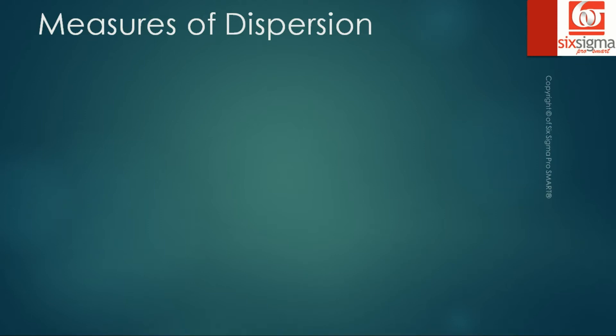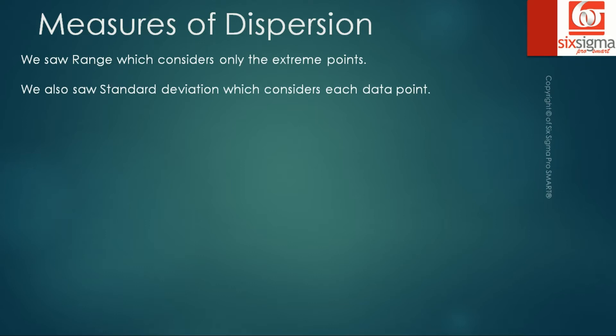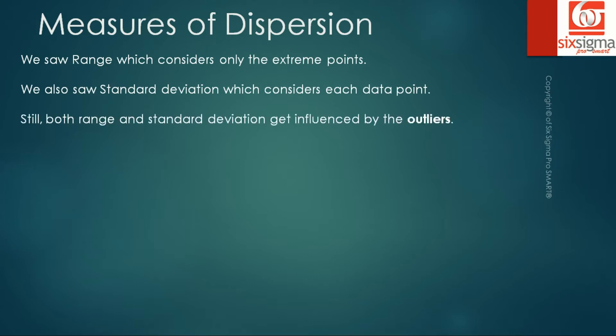Let's do a quick recap. So far we've covered range, but we saw range considers only the extreme points. We talked about standard deviation which considers each data point. Still, both range and standard deviation get influenced by outliers. We talked about outliers in our previous video on measures of central tendency, when we concluded that whenever a data has outliers, using mean as a measure of central tendency is not that good an idea.